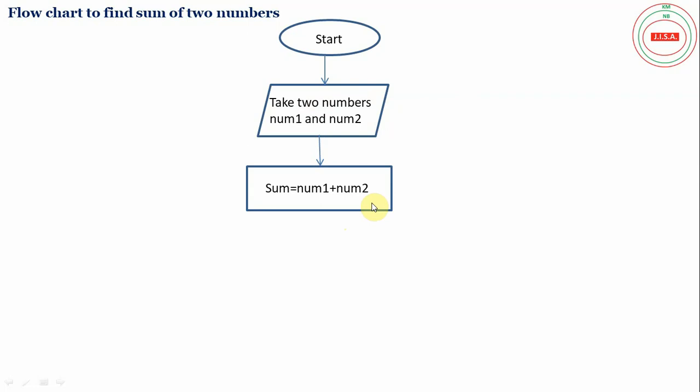Then we move to next step with the help of arrow. Now our output is ready. So we take parallelogram for outputting. In this output box, we print the sum.